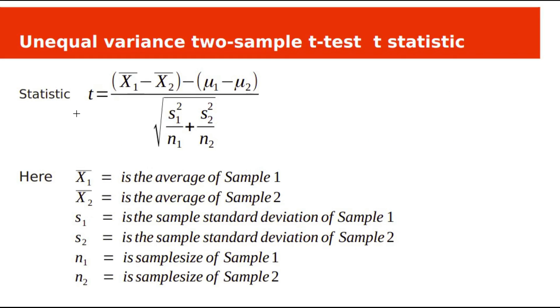The t-statistic is calculated as X1-bar minus X2-bar minus (mu1 minus mu2), divided by the square root of S1 squared over N1 plus S2 squared over N2.